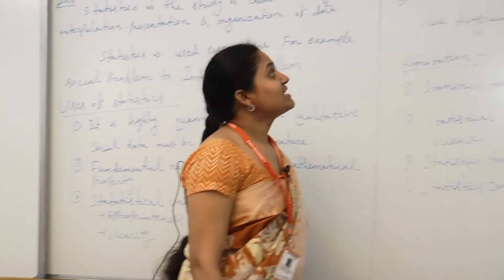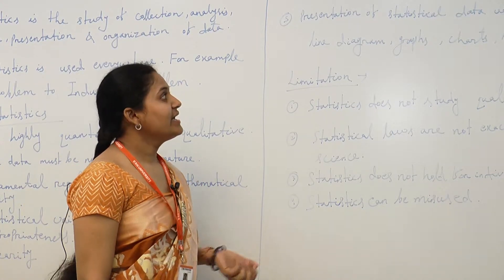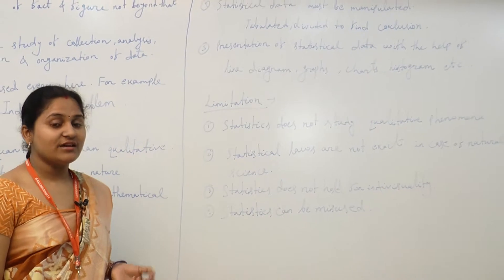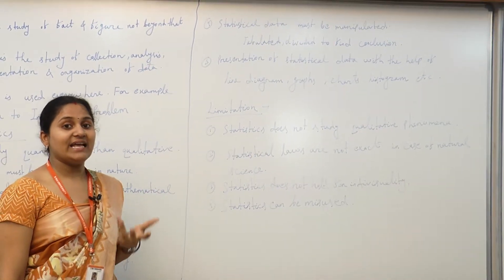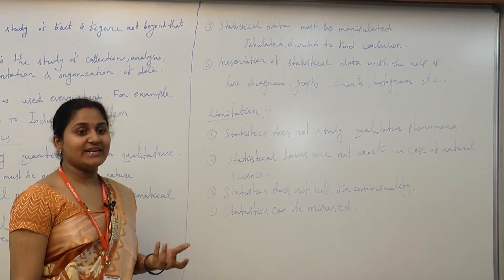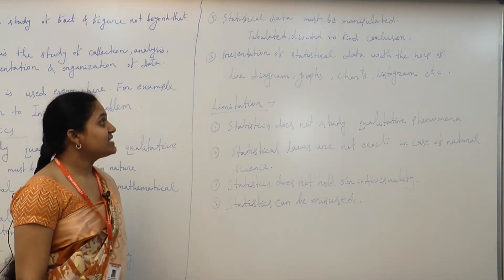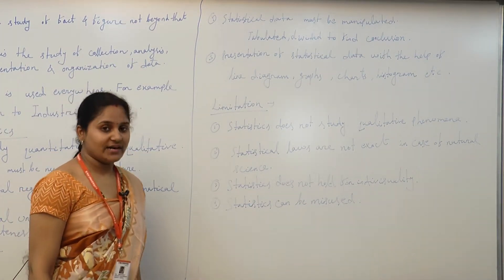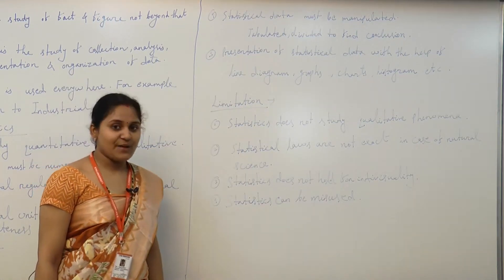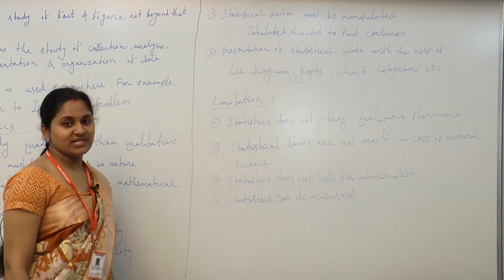The fourth use is that statistical data must be manipulated — through tabulation, division, and calculation — to finally get a result and reach a conclusion. The fifth use is that presentation of statistical data is given by line diagrams, graphs, charts, histograms, and so on. So these are the five uses of statistics.